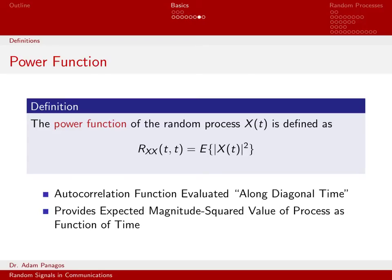Finally, we can do something similar for the autocorrelation function. We have what we call the power function. If I evaluate my autocorrelation function along diagonal time again, so the autocorrelation function evaluated at time t and t, by its fundamental definition is the magnitude squared of X(t). If we go back to how we wrote this down originally in terms of t1 and t2, we said the autocorrelation function at time t1 and t2 was the expected value of X(t1) times the expected value of X(t2) conjugate.